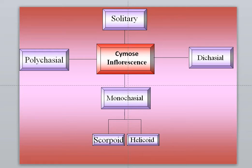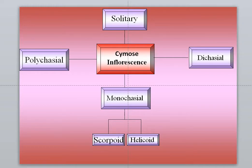Cymose inflorescence are those where the apical bud terminates in a flower. In the case of racimose inflorescence, the apical bud is a growing tip and it continues growth, but in cymose inflorescence, the apical bud terminates in a flower. When a single flower is seen like that, it is called a solitary cymose inflorescence.